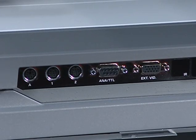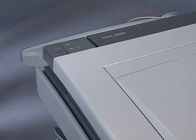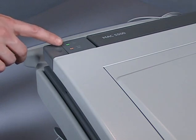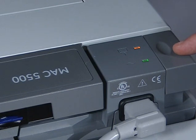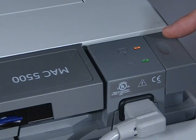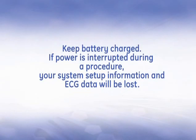The remaining ports will be discussed in detail in the operator's manual and the clinical reference guide for the MAC 5500. At the back left corner of the unit are indicator lights and the internal access button. The green light indicates the unit is plugged into AC power. An amber light next to the battery symbol indicates the battery is charging. When the battery is fully charged, no light shows. Keep the battery charged because if it runs out of power during a procedure, you will lose your system setup information and ECG data.